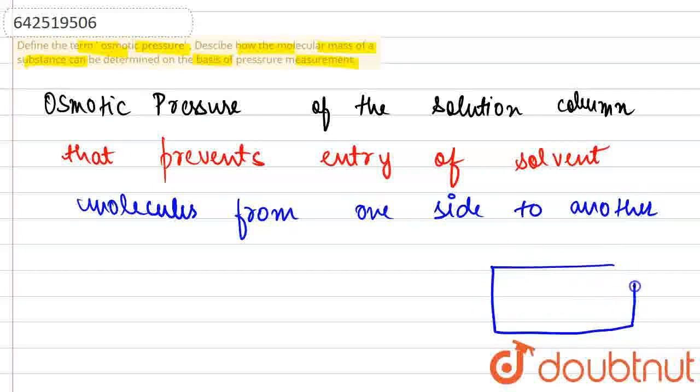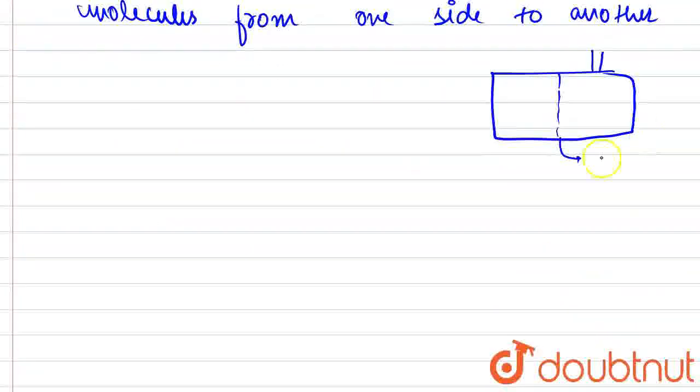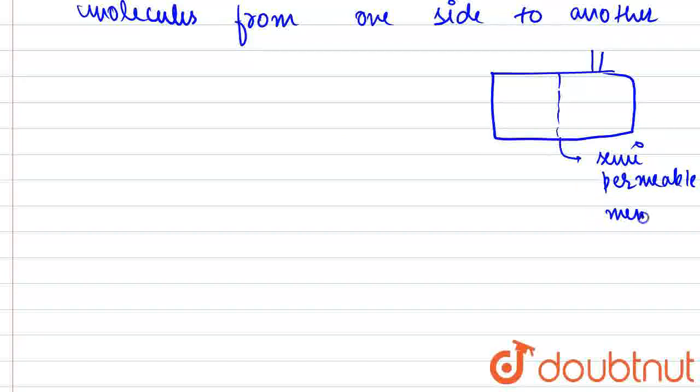For example, let's say this is the system over here. Here we have to control the pressure, and this is the semi-permeable membrane. We'll write it down - semi-permeable membrane via which the passage of molecules will take place.